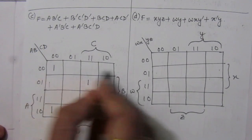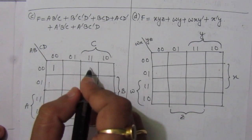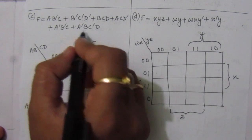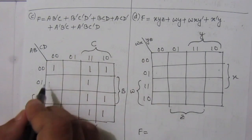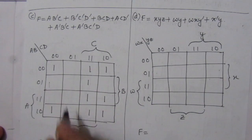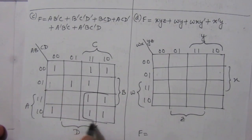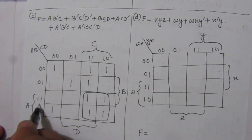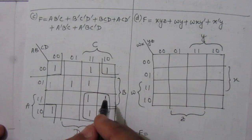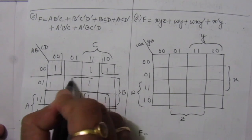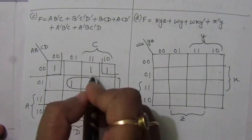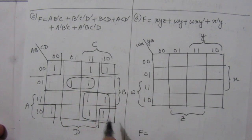Then we have A-bar BC-bar D: A-bar B is that row, and C-bar D is that column, so the common term is there — this will be one term, this will be the second term. Then we have a third term and we can combine like this or like this.